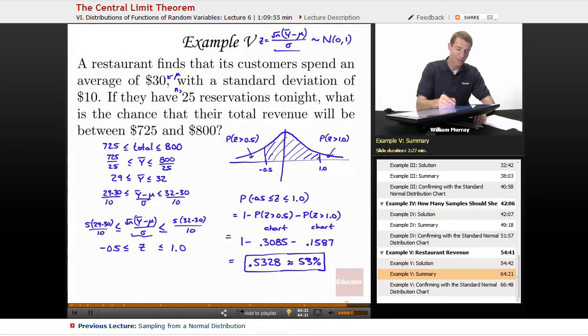So that's the probability that this restaurant is going to, their total profit for tonight is between $725 and $800 tonight. So there is that one missing step from the chart. We'll confirm that on the next slide, but before I turn the page from this slide, let me show you the steps here. I wanted to find the probability that my total was between $725 and $800.